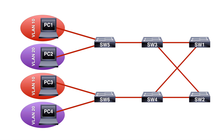What we want to do here is configure Switch 1 as the root bridge for VLAN 10 and Switch 2 as the root bridge for VLAN 20. Additionally, we're going to configure secondary root bridges: Switch 2 will be the secondary root bridge for VLAN 10, and Switch 1 will be the secondary root bridge for VLAN 20. So if something happens to either switch, the other will carry on as root bridge for both VLANs. Let's see what we currently have in place.